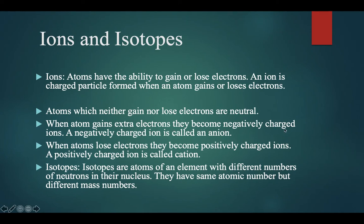Atoms which neither gain nor lose electrons are neutral. When atoms gain extra electrons, they become negatively charged ions. A negatively charged ion is called an anion. When atoms lose electrons, they become positively charged ions. A positively charged ion is called a cation. Chloride and fluoride are common anions.